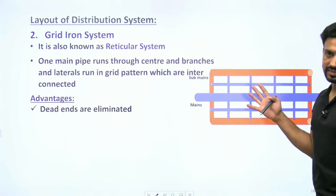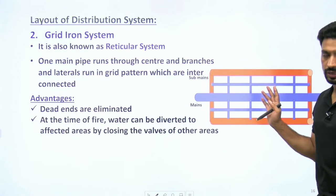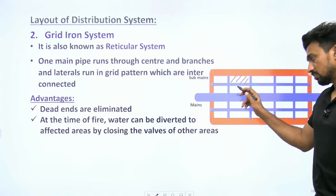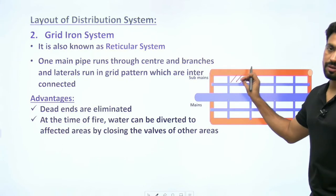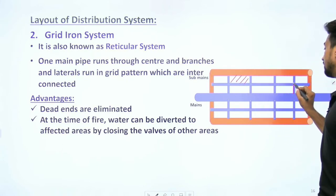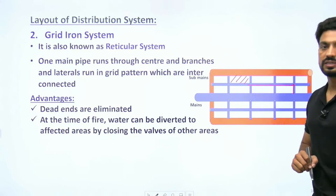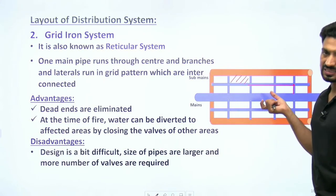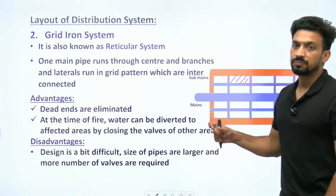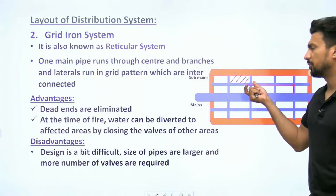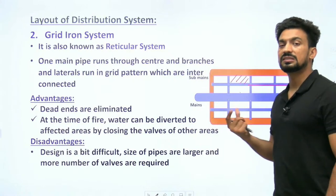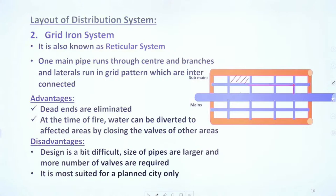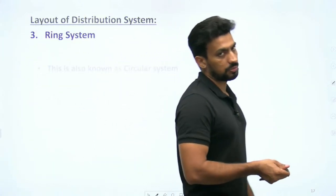Grid iron system का advantage: कोई dead end नहीं है, पानी circulate होता रहेगा। अगर कहीं blockage आ गया तो भी supply नहीं रुकेगी - अलग-अलग routes से divert कर सकते हैं। Fire के समय किसी particular region में आग लगे तो बाकी सारी supply रोककर सारा पानी वहां divert किया जा सकता है। Disadvantage: pipeline की costing थोड़ी ज्यादा होगी, design difficult होगा, ज्यादा number of pipes और उनके joints, valves ज्यादा use होंगे। यह planned city के लिए suited है।